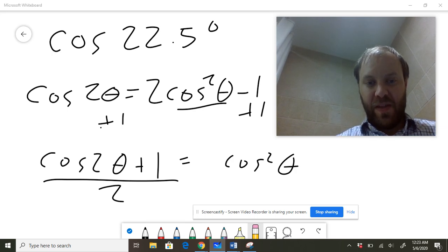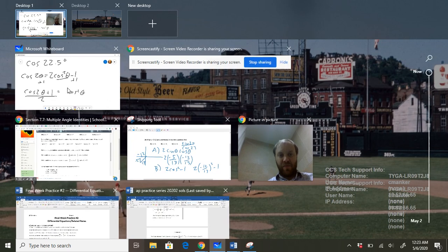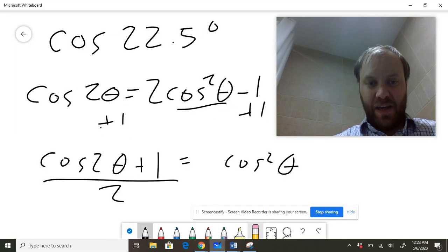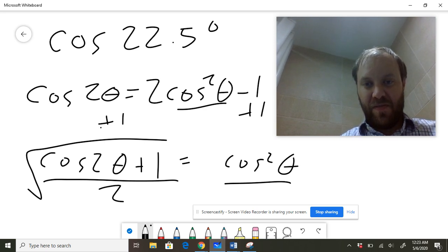Now, if I take the square root on the right-hand side, I'm just going to end up getting cosine of θ. So over here, if I take the square root, we just end up with cosine of θ, so I'm going to erase that square there.